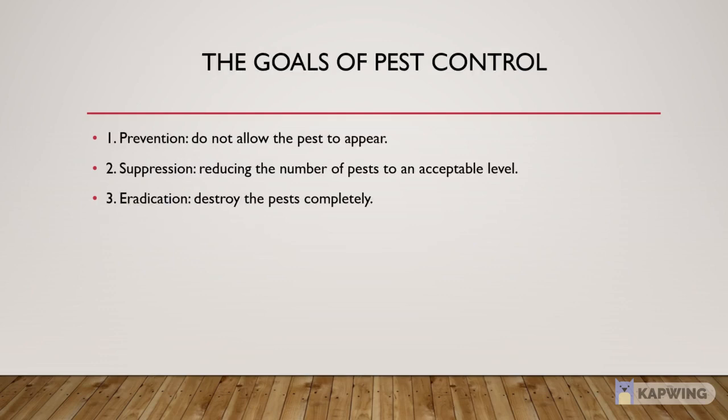The goals of pest control. There are basically three goals of pest control. Number 1: Prevention, in which we do not allow the pest to appear. Number 2: Suppression, in which we reduce the number of pests to a level at which they are not able to cause any harm to humankind and animals. Number 3: Eradication, in which we destroy the pest population completely.